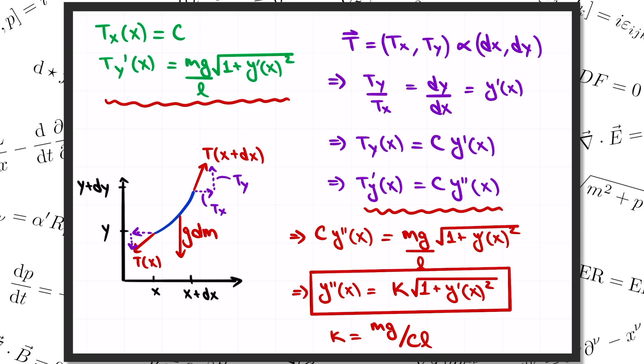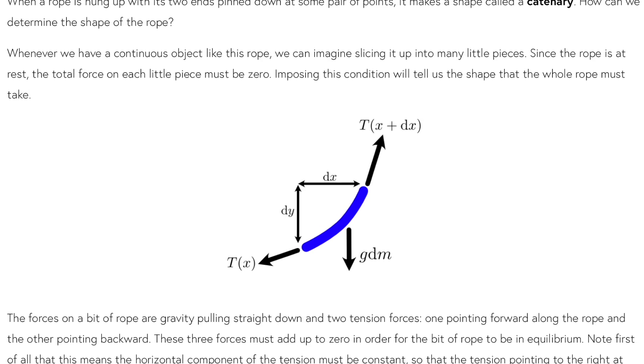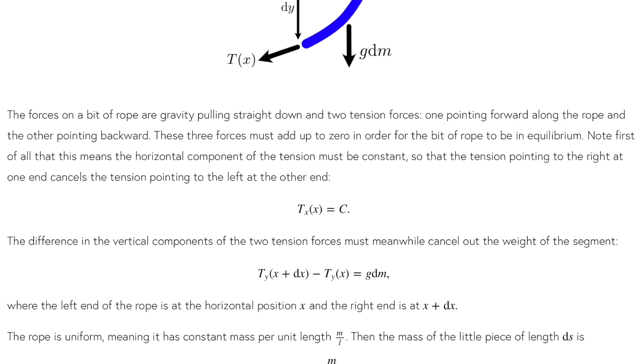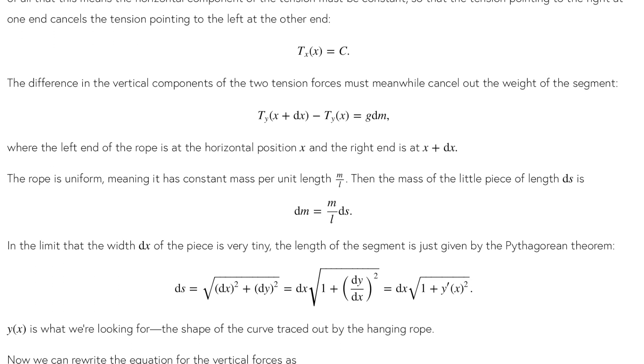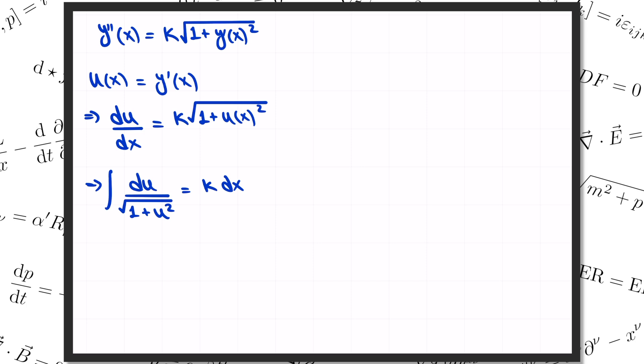Now we're going to have to do some math to actually solve this equation and figure out y of x. I've also written up some notes, by the way, that go along with this video. So if you'd like to see all these equations collected in one place, you can check that out at the link I'll put in the description. So how are we going to solve this equation? Well, the first thing to notice is that this second order equation for y can be thought of as a first order equation for u equals y prime. In other words, if I define u equals y prime, I can write the same equation as u prime equals kappa times the square root of 1 plus u squared. So now this is a first order differential equation, and we can solve it pretty easily just by separating the variables. So in other words, I'm going to put all the u's on one side and the x's on the other side. I've got du divided by the square root of 1 plus u squared on the left, and kappa times dx on the right. And then we just integrate both sides.